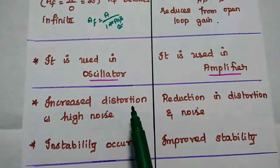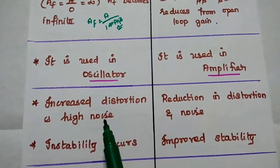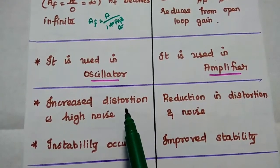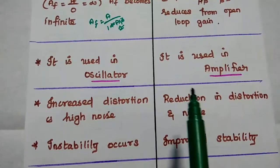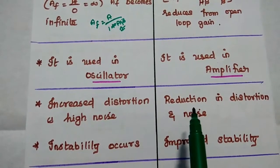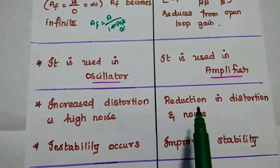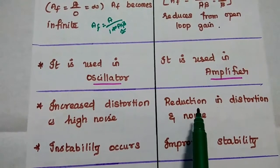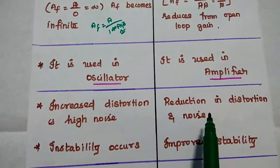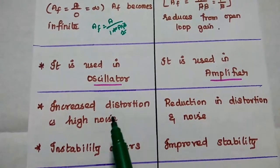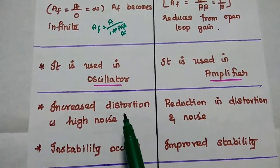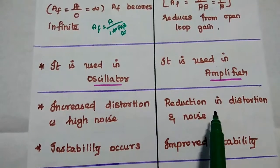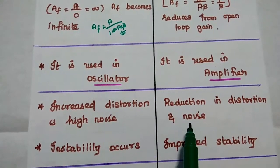Increased distortion and high noise are the major disadvantages of positive feedback. In negative feedback, reduction in distortion and noise are the major advantages. So positive feedback has high distortion and high noise, while negative feedback has low distortion and noise.